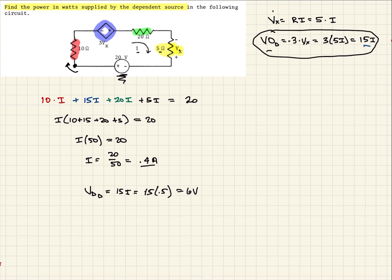So now we can go back to our original power equation. So our power, remember, is voltage times current. So in this case, our power of the dependent source is going to be the voltage drop across it, which is 6 volts, times the current that passes through it, which is 0.4 amps. And so if we multiply that out, we should get 2.4 watts. So this is the power that is supplied by our source. So since it's supplied, it should be negative. And, yeah, so that's what we're looking for. Power in watts by the dependent source.